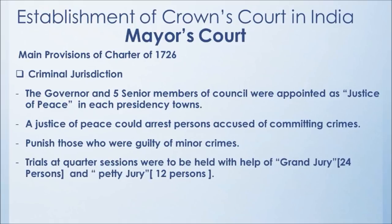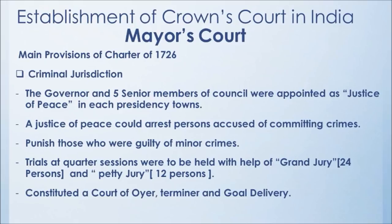Trials at quarter sessions were to be held with the help of a grand jury and a petty jury. The petty jury consisted of 12 persons, and the grand jury had 23 to 24 persons. Criminal cases were decided with the help of these juries. They also constituted a Court of Oyer, Terminer, and Gaol Delivery — similar to the court in England — which the Governor could constitute. This concludes the third provision on criminal jurisdiction.